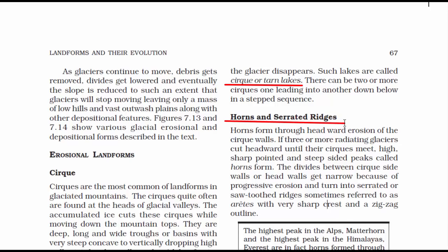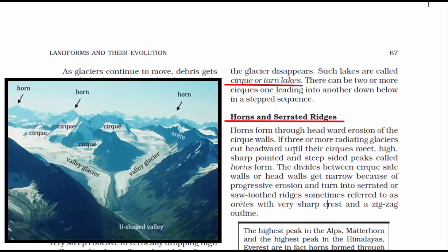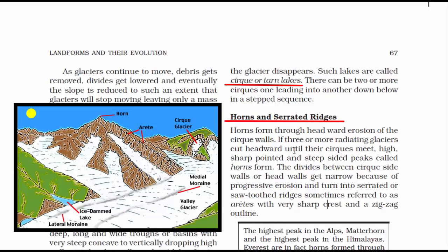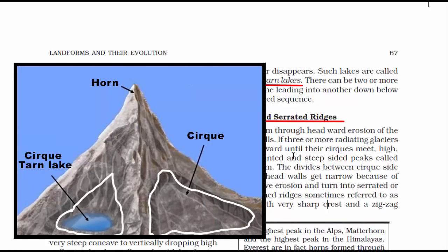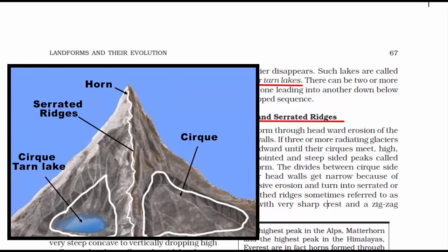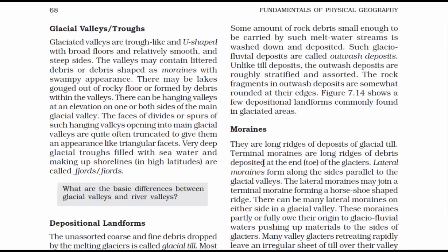The second type of landform is horns and serrated ridges. Horns are peaks that are formed when three or more cirques meet. Cirques are cup-shaped cuts in the valley. If there are three or more cup-shaped cuts in all directions, naturally the top portion of the valley gets sharper and forms into a peak — this is called a horn. Serrated ridges are narrow zigzag walls on the cirques. A ridge is a long, narrow, raised portion of land, so the wall between two cirques forms a long, narrow raised border called a serrated ridge.